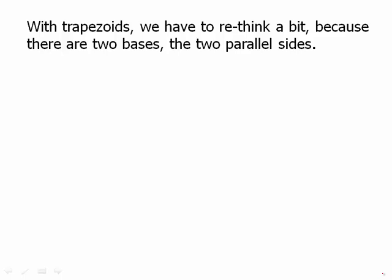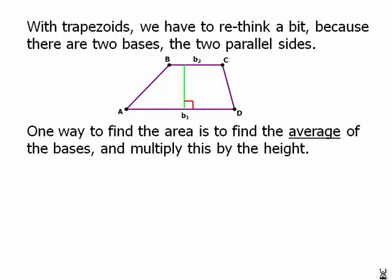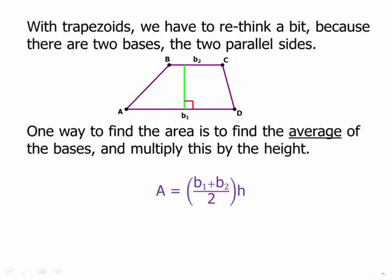With trapezoids, we have to rethink a bit, because there are two bases, two parallel sides. So what exactly would we mean by base times height? Well, the height is pretty clear, but we have two bases. So what are we going to do? One way to find the area is to find the average of the bases and multiply this by the height. So that is the formula for the area of a trapezoid. We average the bases and multiply the height times the average of the bases.